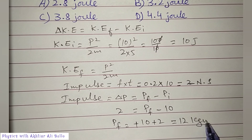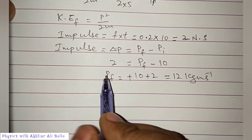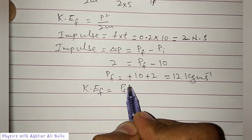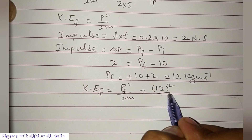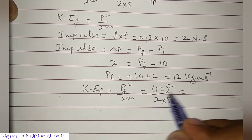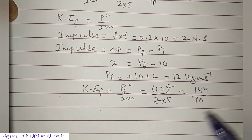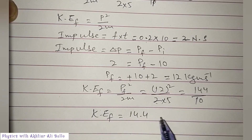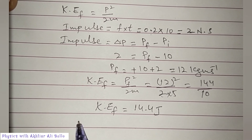Final linear momentum equals 12 kg·m/s. Now we calculate final kinetic energy: final KE equals final linear momentum squared divided by 2M. The square of 12 is 144, divided by 2 into 5, which is 10. So final kinetic energy is 14.4 Joules.